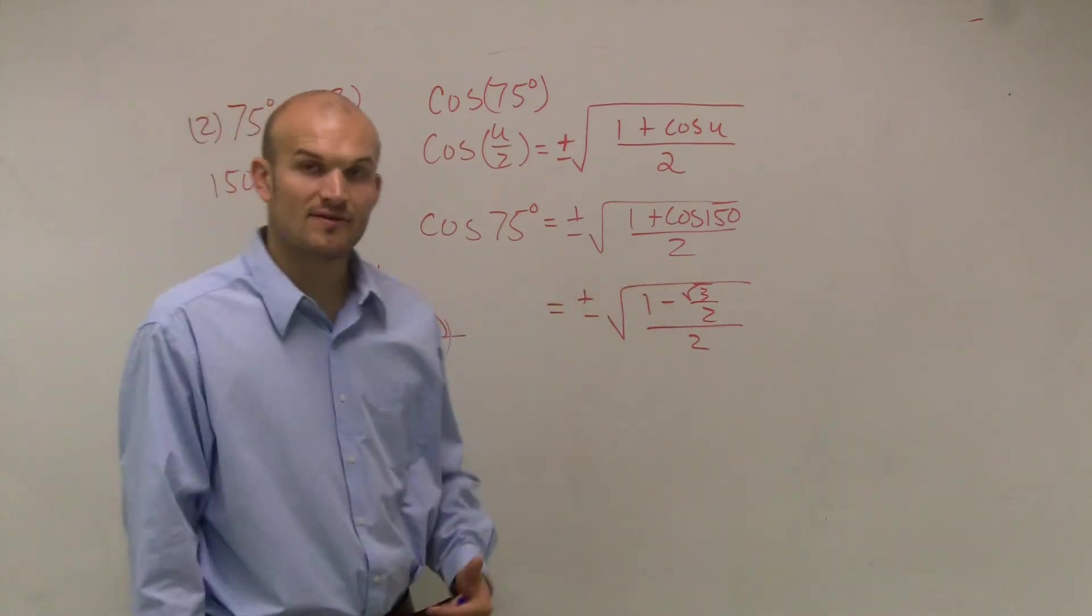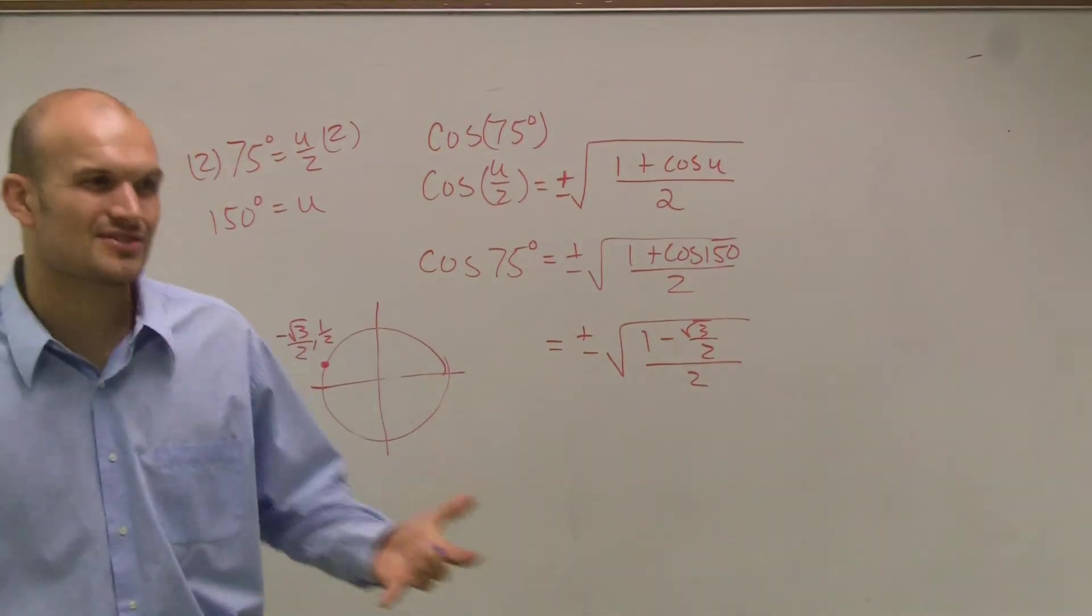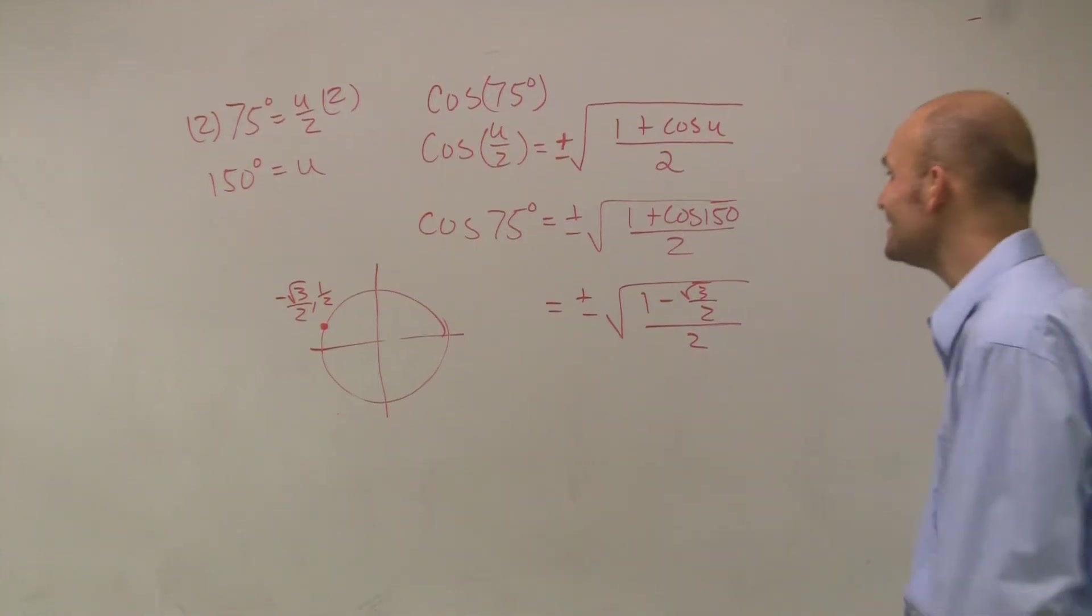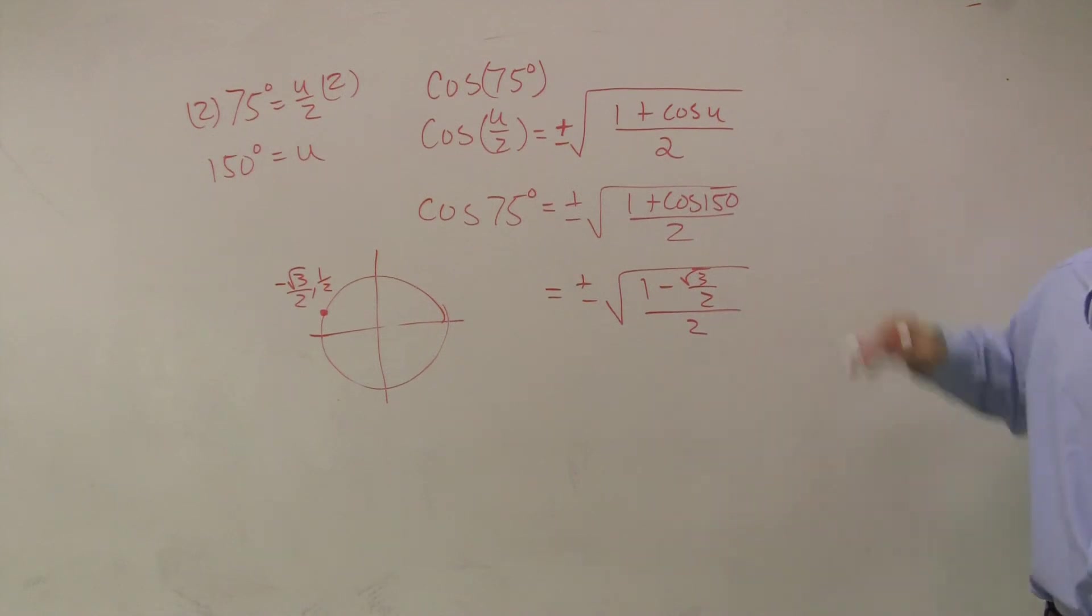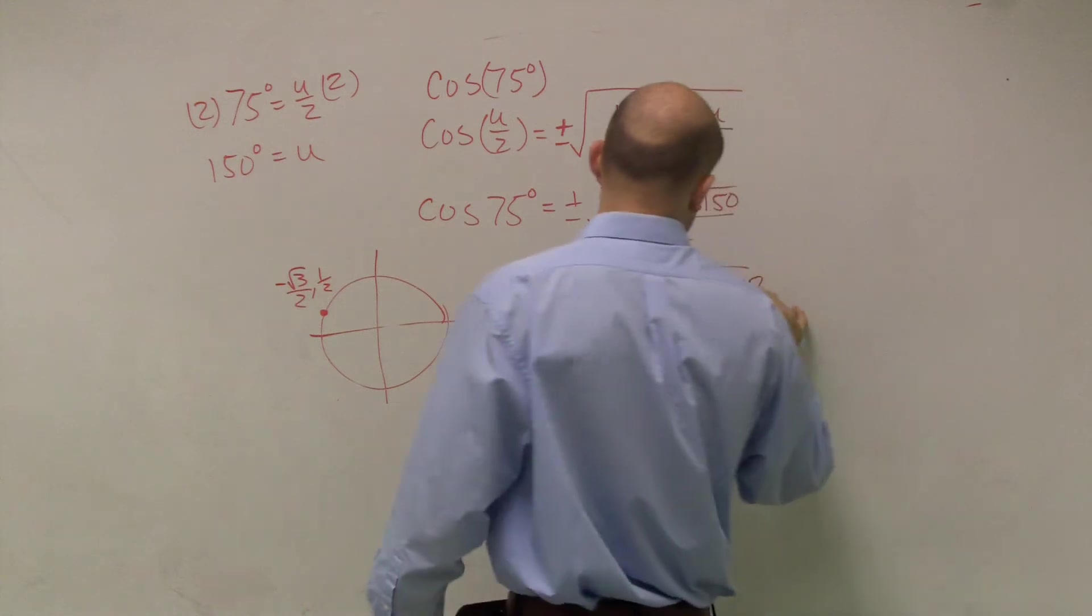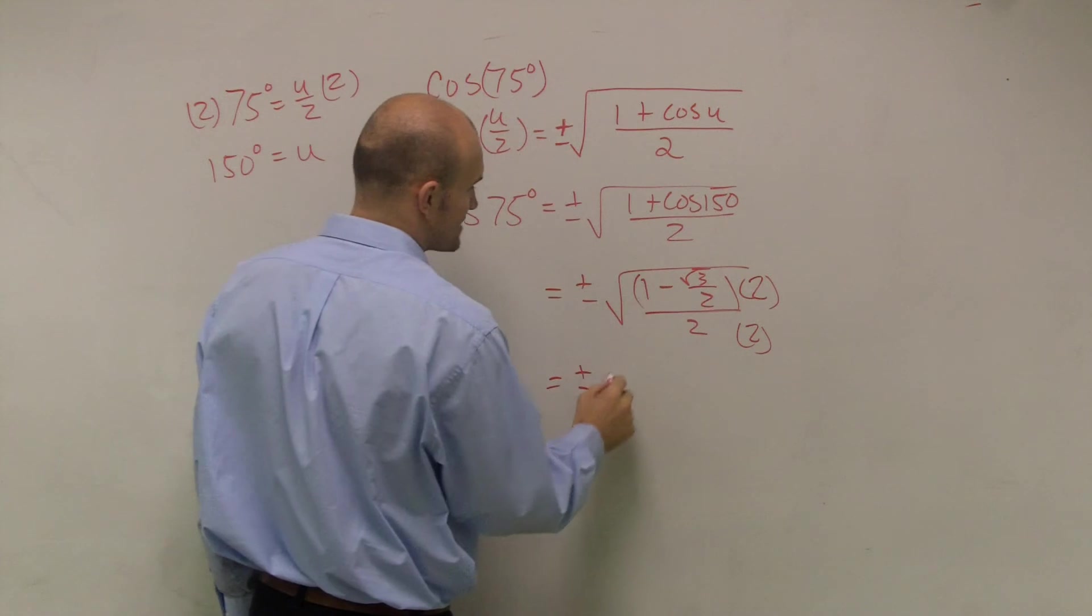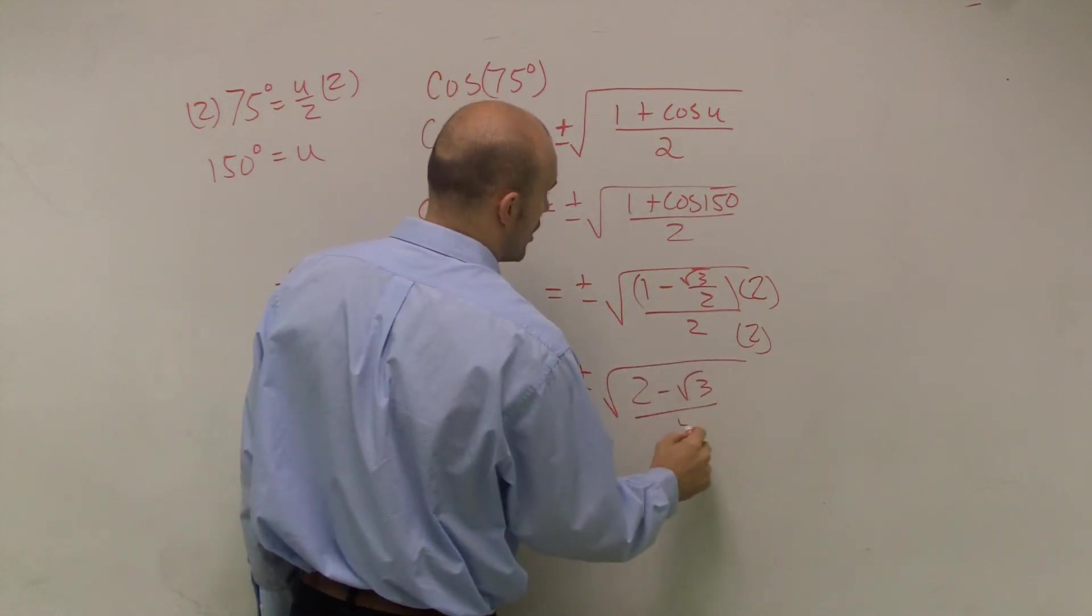Now what we need to do to simplify this is get rid of this fraction. So what we're going to do is multiply by the denominator. I see my denominator here is 2, so I'm going to multiply the top and the bottom to keep my fraction equivalent. So I'm going to multiply everything by 2. So when I do that, I get plus or minus radical 2 minus radical 3 all over 4.